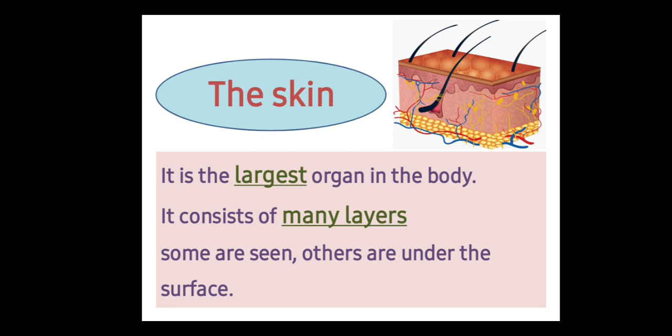The skin consists of many layers. We can see the outer layer, but we cannot see the inner layer. The skin is the largest organ in the human body and it consists of many layers.